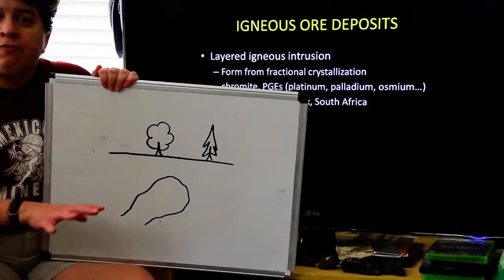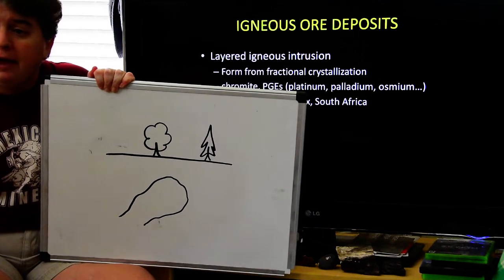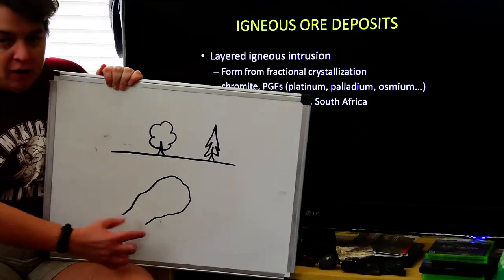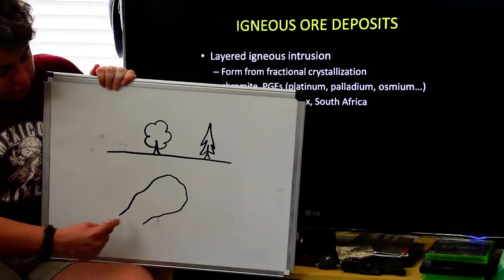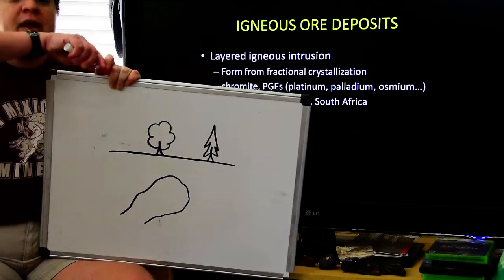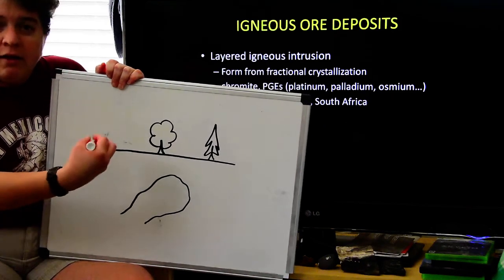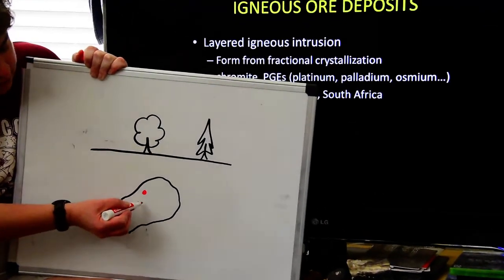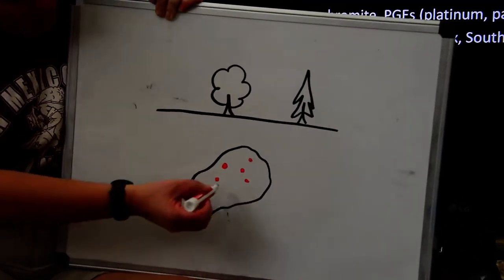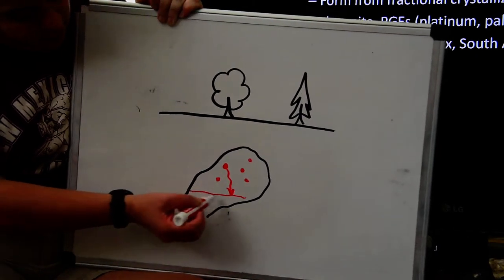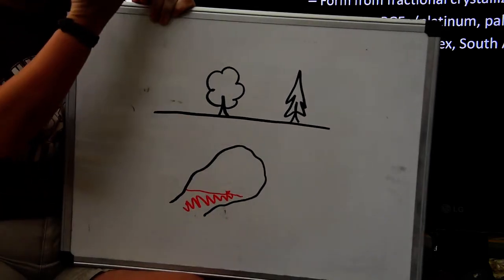Igneous rock forms deep underground and then rises towards the surface. If it erupts at the surface, we have a volcano. But sometimes, these bodies of igneous rock don't make it to the surface — they cool and become solid underground. That's an igneous intrusion. To make it a layered igneous intrusion, as the magma cools, it reaches a point where a certain mineral starts crystallizing. That mineral sinks and forms a layer.